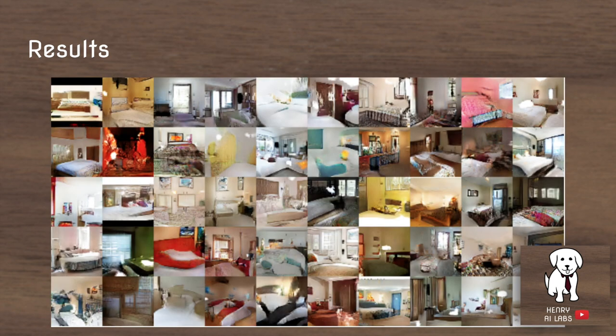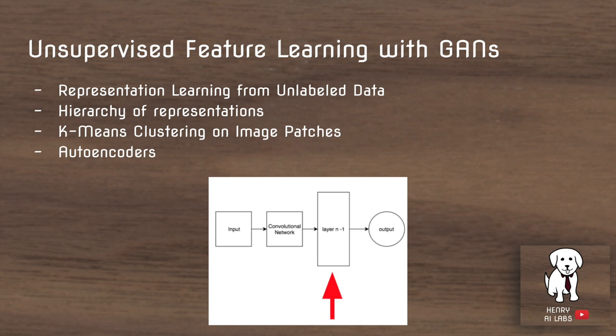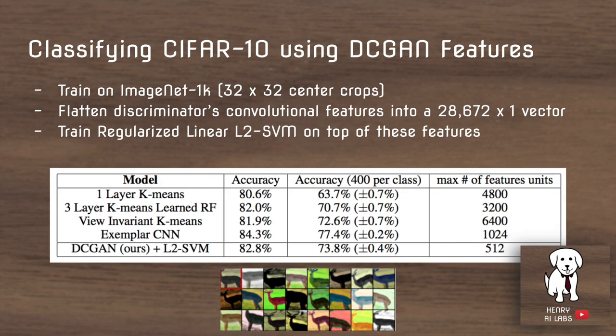These are the results on the LSUN 64-by-64 bedroom images. Another cool idea they explore is unsupervised feature learning with GANs. There are many methods for unsupervised feature learning where you have an enormous dataset but don't want to label it because labeling data takes a lot of time and is expensive. Some approaches include autoencoders and a technique called exemplar CNN, which still beats the DCGAN on unsupervised feature learning. The table shows how all the classic unsupervised learning methods perform on this feature learning task.